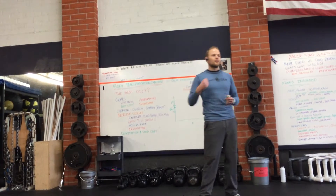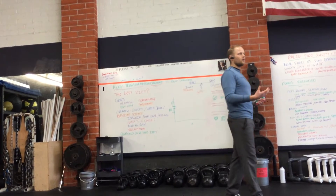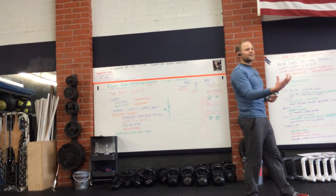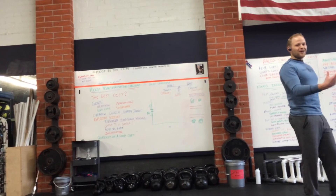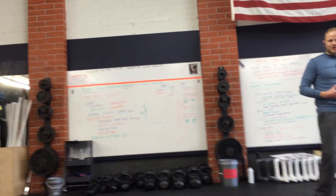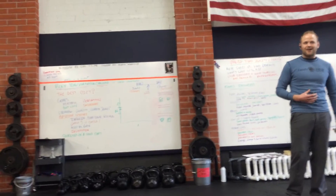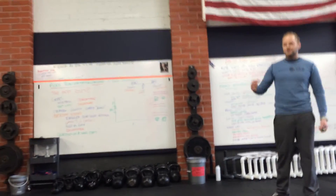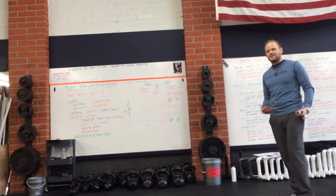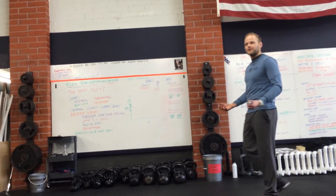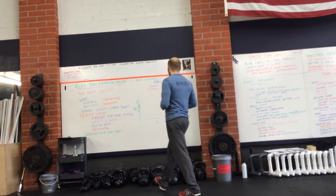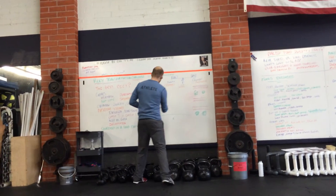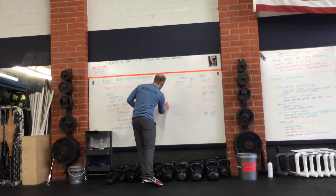Just like Kool-Aid — you don't want it without sugar because it's super sour, but you also don't want too much sugar because it's too sweet. So we want our sugar right in the middle ranges.